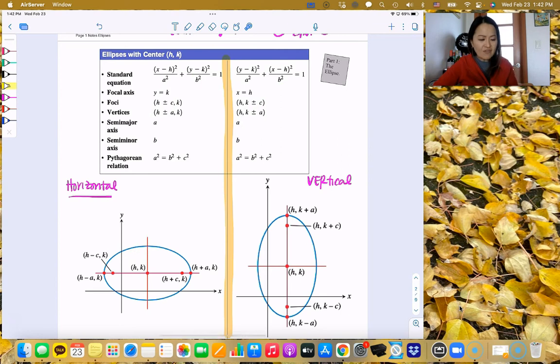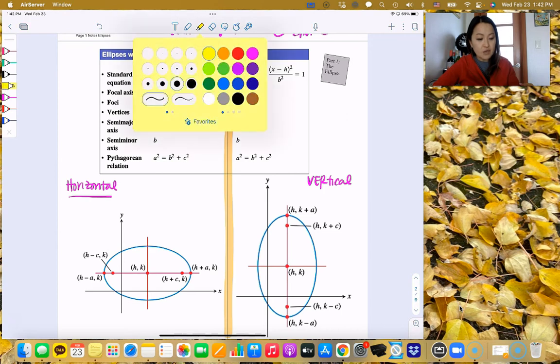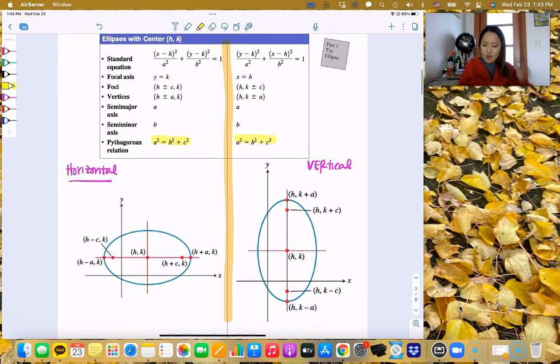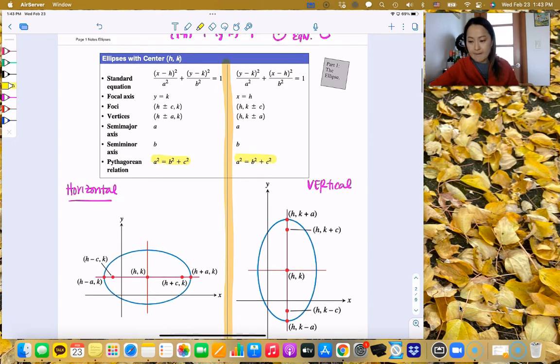But again, don't have to memorize any of this kind of stuff, except for this here. Don't have to memorize because it's obvious. And you're going to see why the Pythagorean relation here is a little bit different from the parabola. The parabola of the C squared equals A squared minus B squared, right? But now the Pythagorean relation here in the ellipse is A squared equals B squared plus C squared, which is like your Pythagorean theorem. Okay. Okay. I don't know if I'm going to go into all that, but we can actually just kind of look at all this.